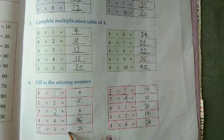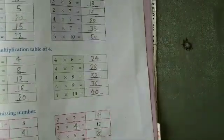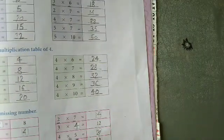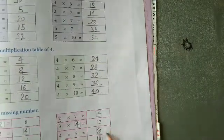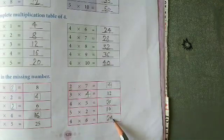2 sevens are 14, 3 fours are 12, 4 fives are 20, 5 twos are 10, 4 sixes are 24.